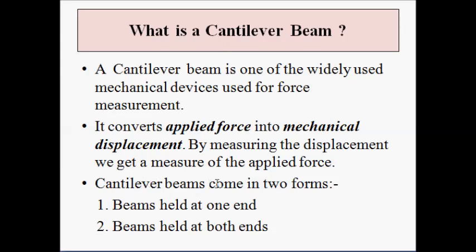Cantilever beams come in two configurations. In the first configuration, the beam is held stationary at one end while the other end is free and undergoes deformation due to the applied force. In the second configuration, the beam is held fixed at both ends and the deformation takes place in the middle.